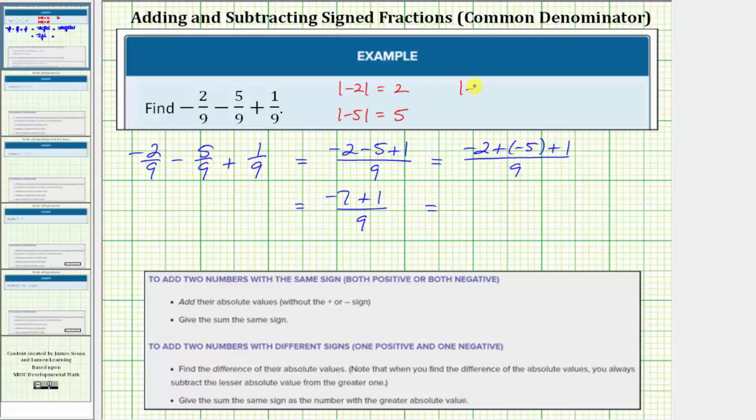The absolute value of negative seven is seven. The absolute value of one is one. When we find the difference, it's always the smaller value subtracted from the larger value. Seven minus one equals six. But because negative seven has the larger absolute value, the sum is negative six.